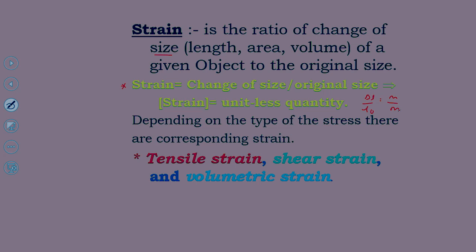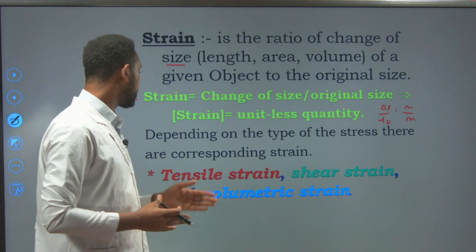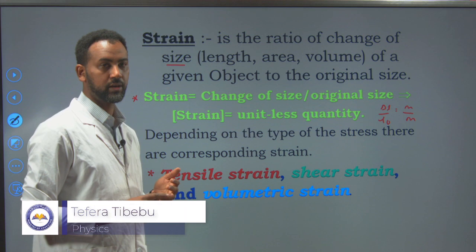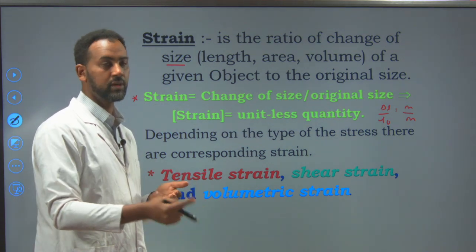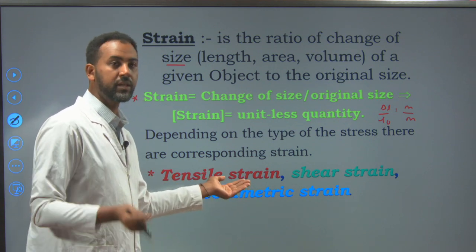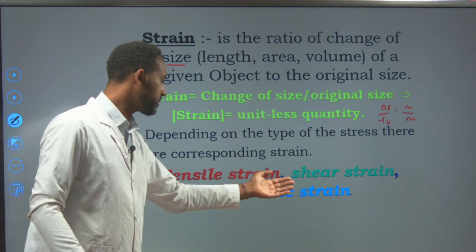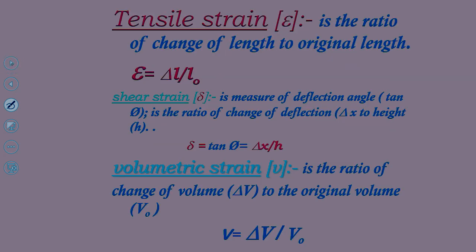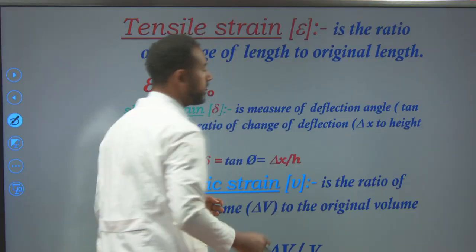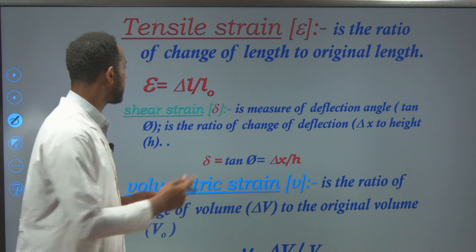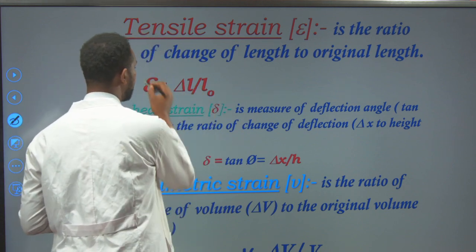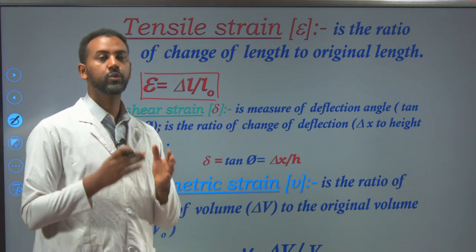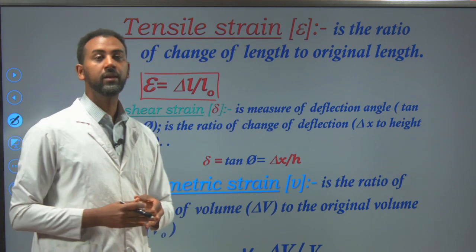Depending on the type of stress exerted, strain can be classified into three types corresponding to the three stresses. Tensile stress leads to tensile strain, shear stress leads to shear strain, and pressure leads to volumetric strain. Tensile strain, symbolized using the Greek letter epsilon, is the ratio of change of length to the original length. As you exert perpendicular force to a cross-sectional area, you form a tensile strain.